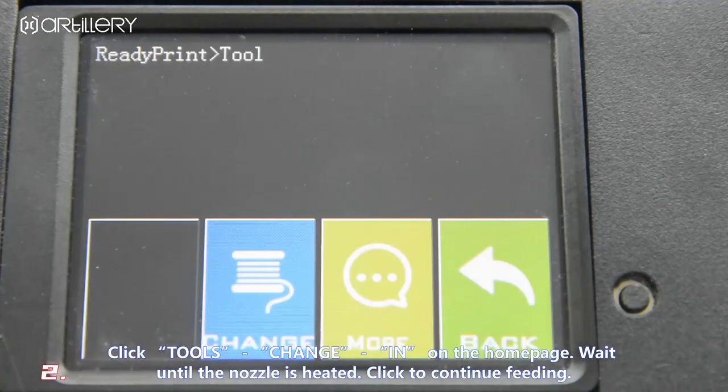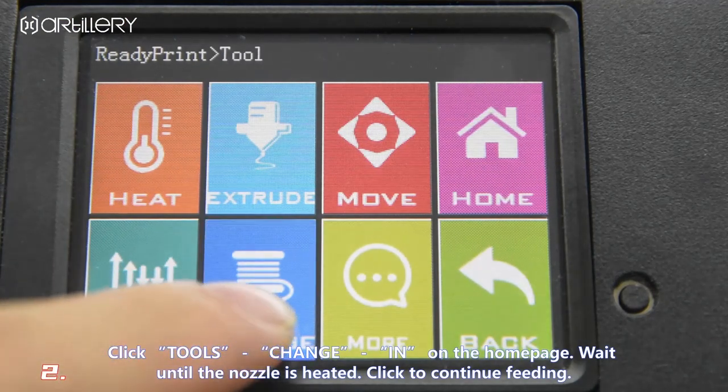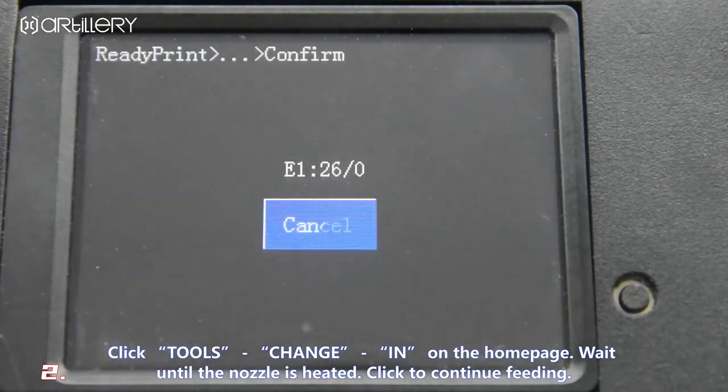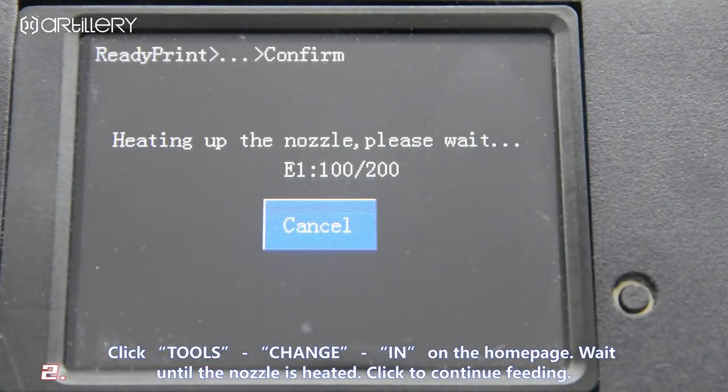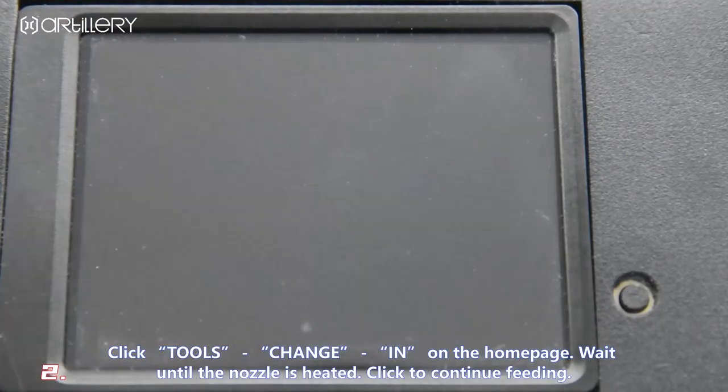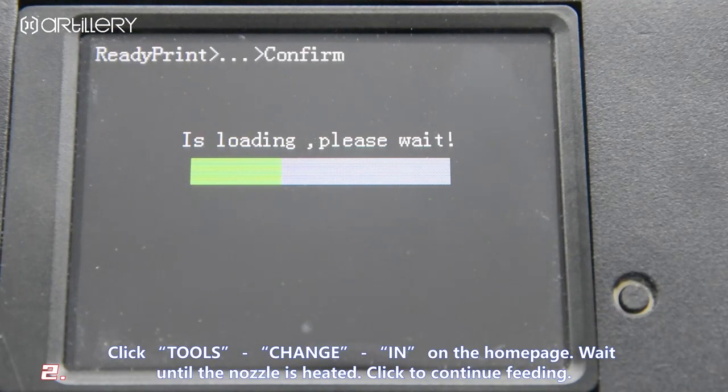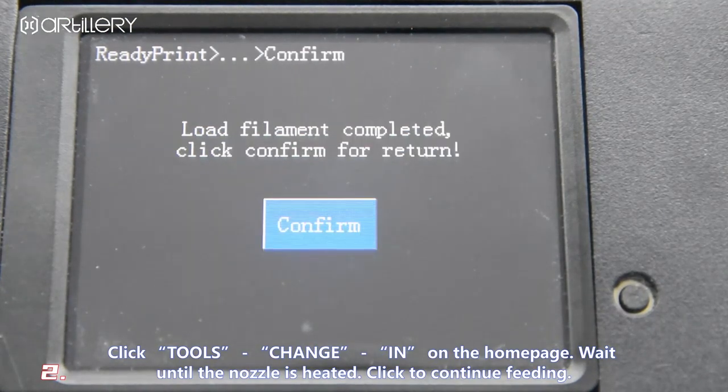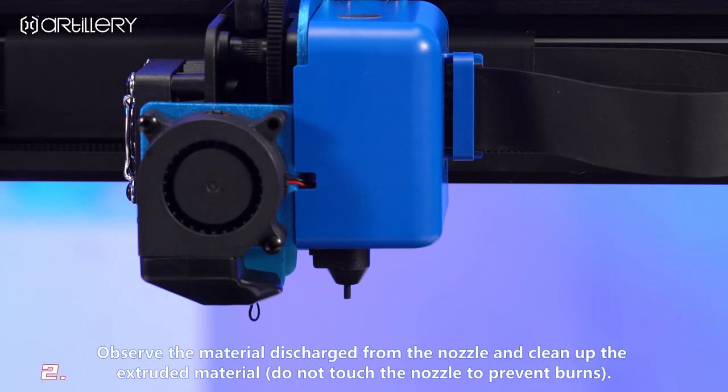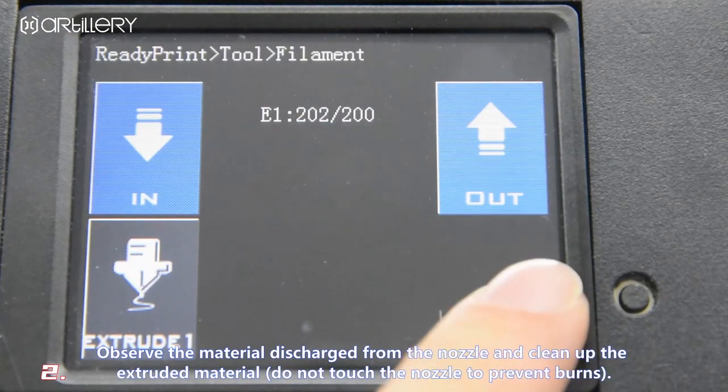Click, choose, change filament on the home page. Wait until the nozzle is heated. Click to continue feeding. Observe the material discharged from the nozzle and clean up the extruded material. Do not touch the nozzle to prevent burns.